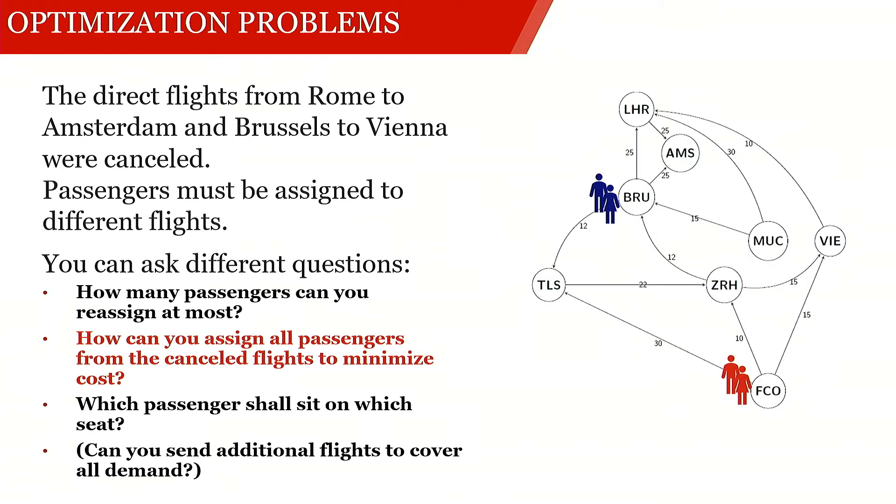What we would like to have is that these passengers from Brussels, for example, travel to Toulouse, then to Zurich, and then finally to their destination Vienna, while the passengers from Rome, for example, travel to Zurich, then to Brussels, and then to Amsterdam, and like this also reach their final destination.